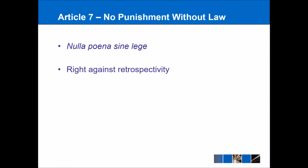Article 7 relates to the rule of law. The Latin phrase nulla poena sine lege basically translates as 'there should be no punishment without law.' It goes further and argues for a right against retrospectivity — meaning that if you did something today and the government created a law tomorrow banning it, you couldn't be arrested for what you did yesterday, because you wouldn't have known about the law at that time.